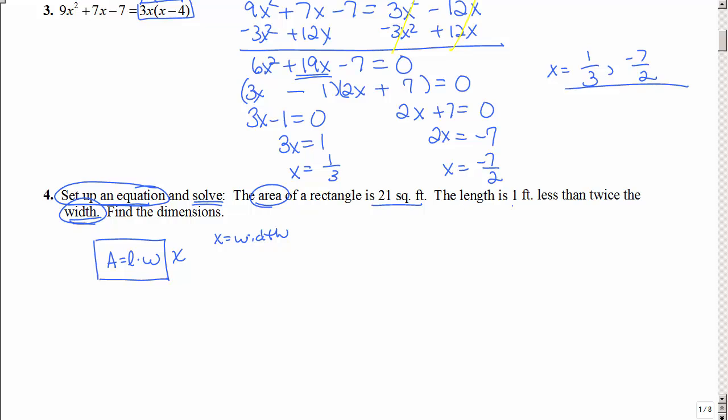Now the length is one foot less than twice the width. So if the width is x, twice that is 2x and one foot less, we would subtract one. Remember that less than you want to subtract at the end. It is not one minus, but you're subtracting one.